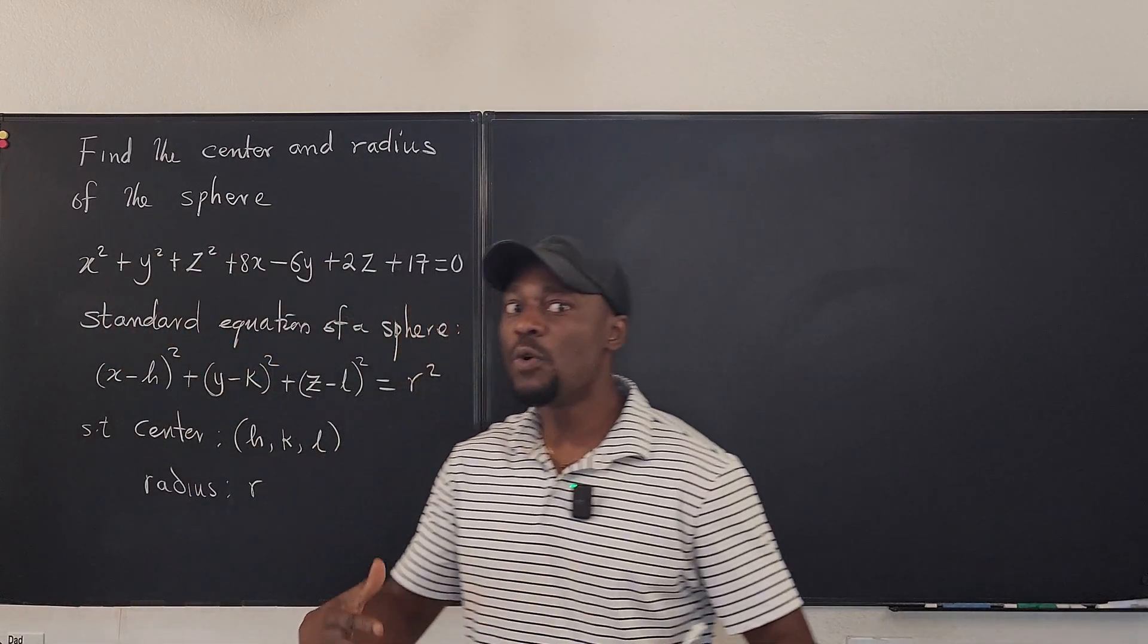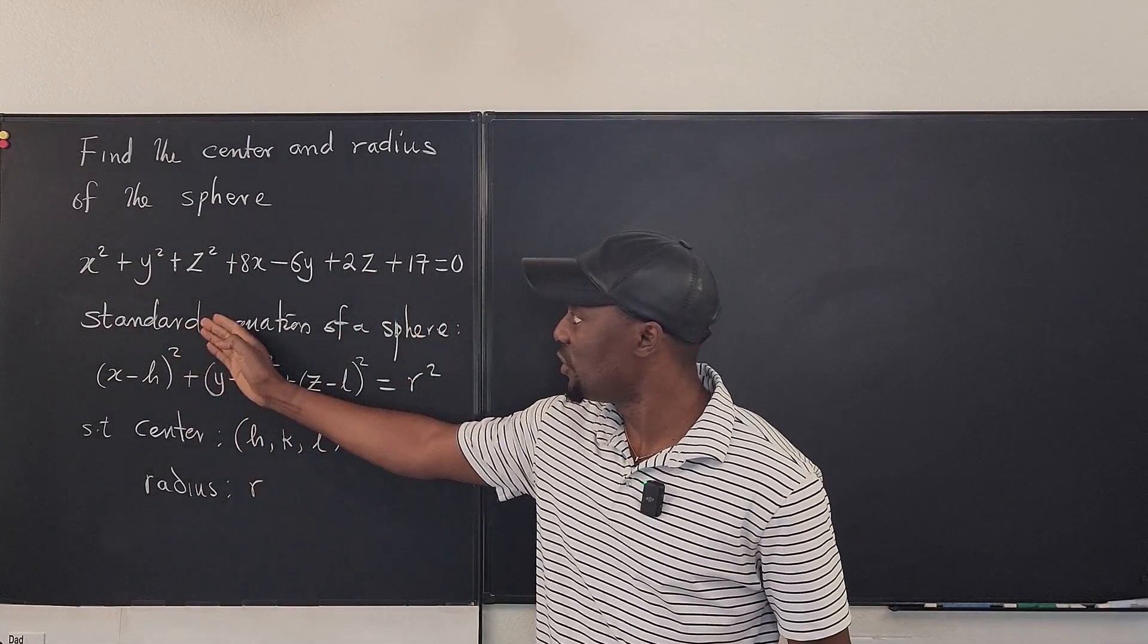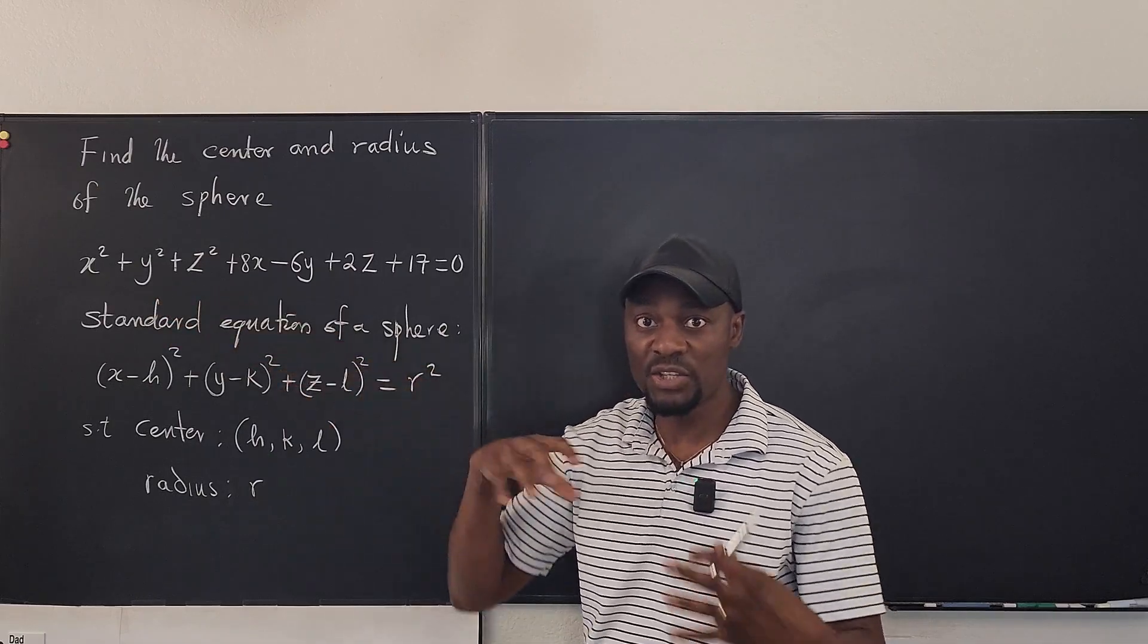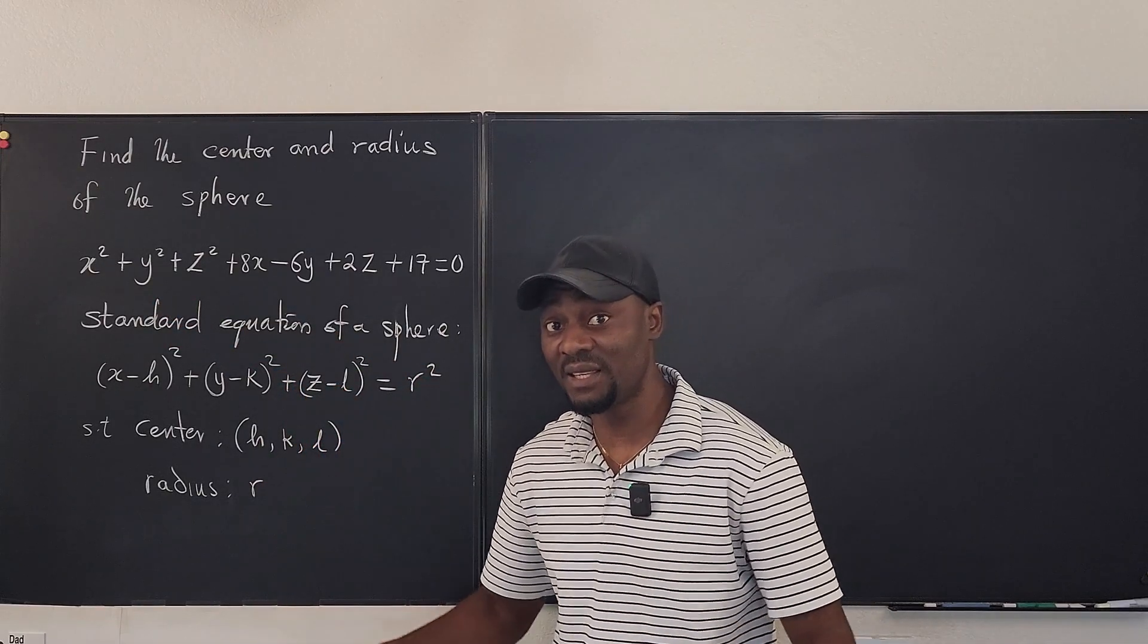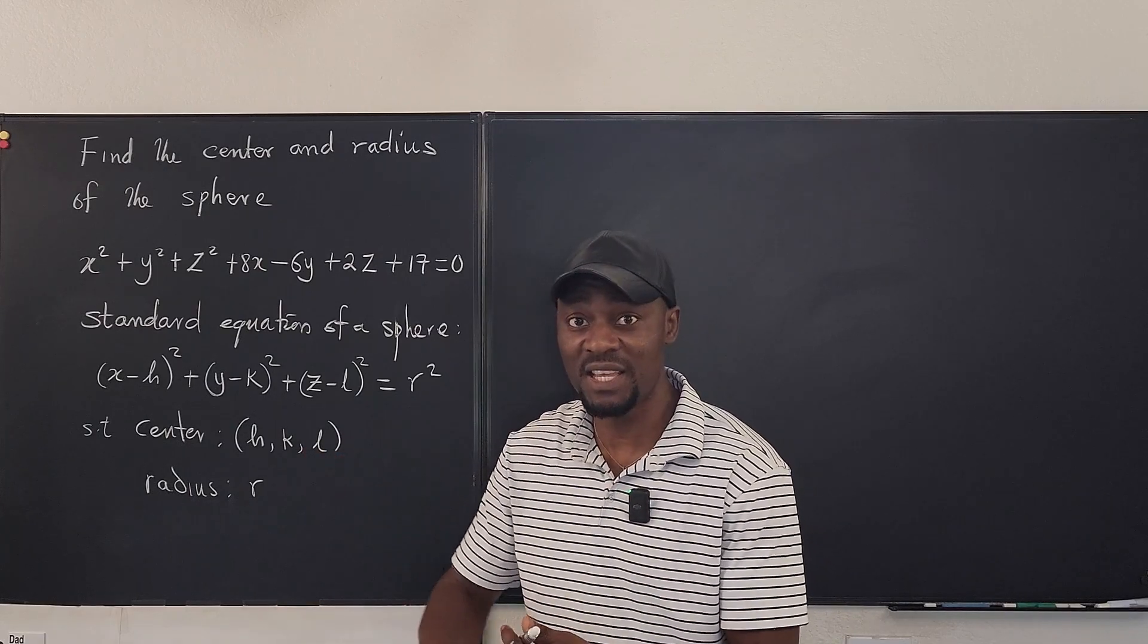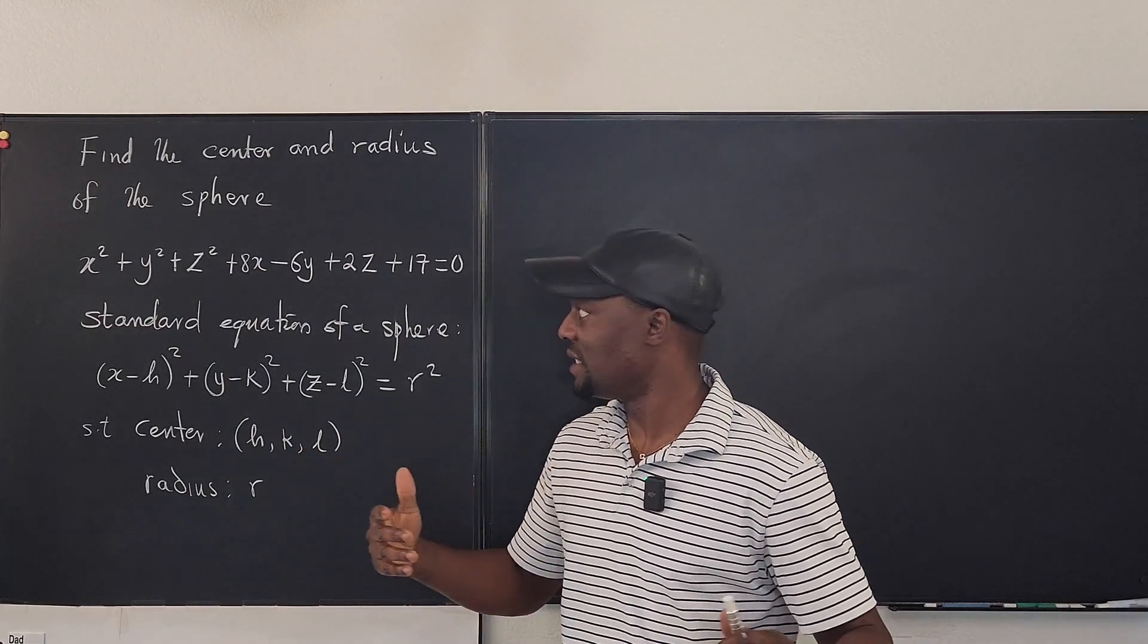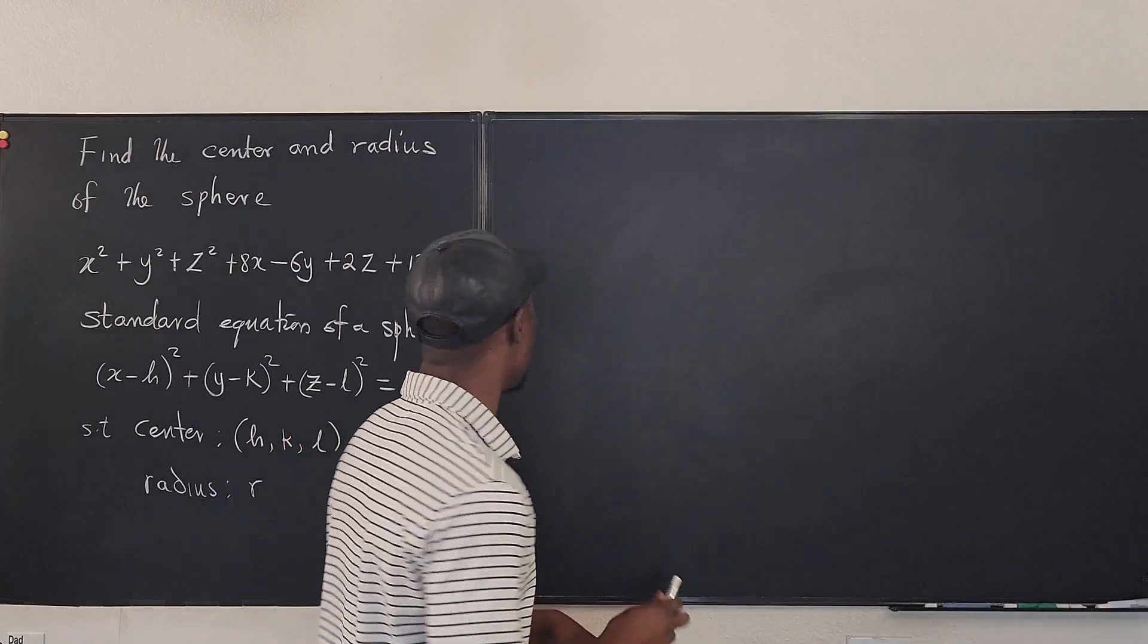That's it. So now you already know that all you have to do is complete the squares for each of the components. We just need to do completing the squares for each of x, y, and z and we're going to come to this point. So let's quickly do that.